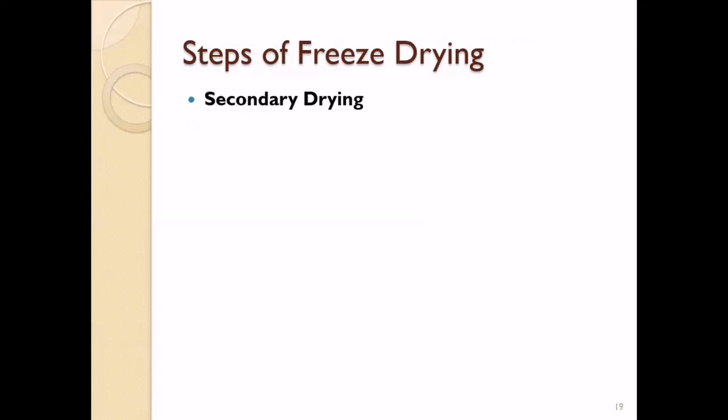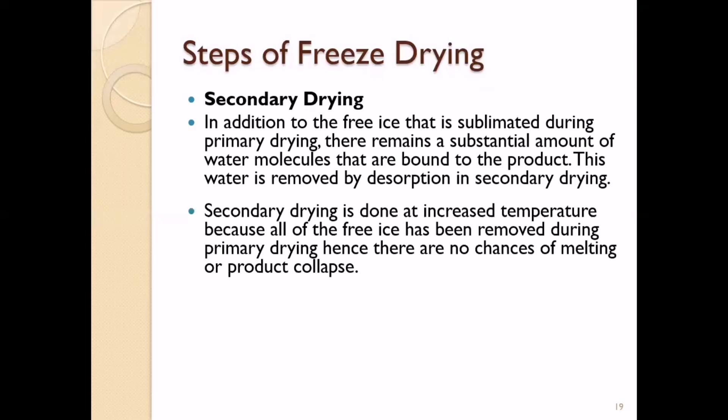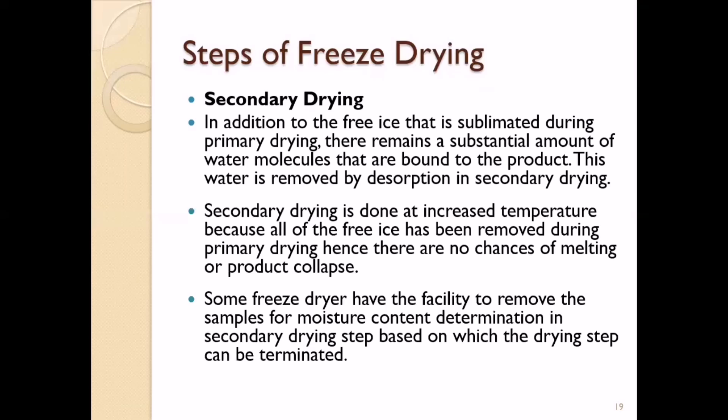The next step is secondary drying. In addition to the free ice sublimated during primary drying, there remains a substantial amount of water molecules bound to the product through chemical bonds. This bound water is removed in the secondary drying process by a method called desorption, whereas primary drying uses sublimation. Secondary drying is conducted at increased temperature because all free ice has been removed during primary drying, so there is no risk of product melting or collapse.